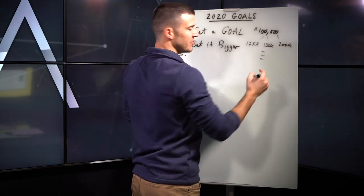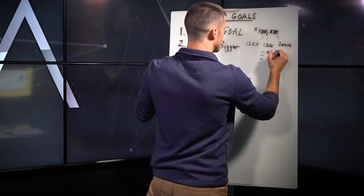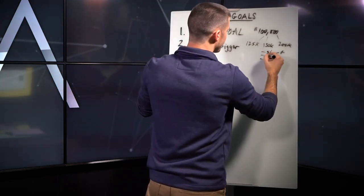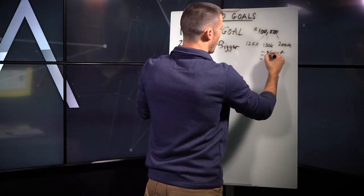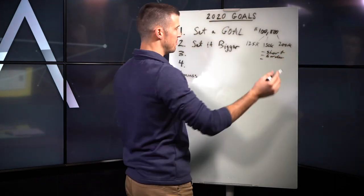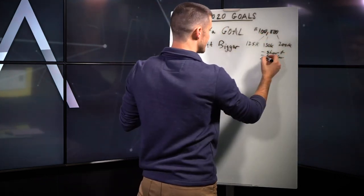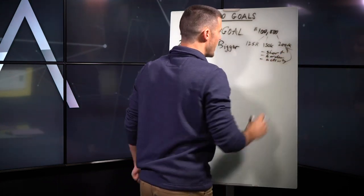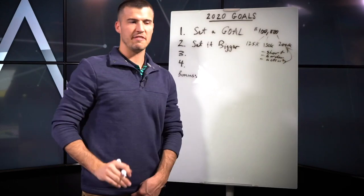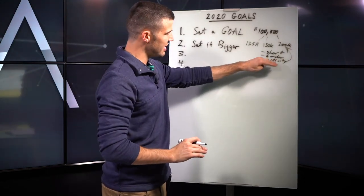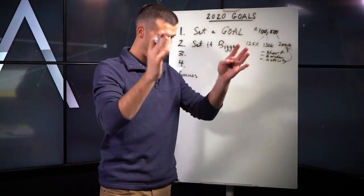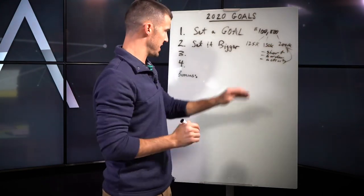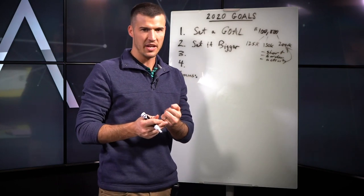And you say, well, why? Number one, if you fall short, you still hit it. Also, you will, it'll make you work harder to actually hit the bigger goal. And you'll end up doing the activity for the bigger goal and end up falling, even if, say that you do the activity for 200k, because you've outlined it, you know what it takes.